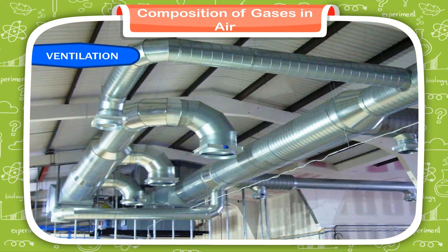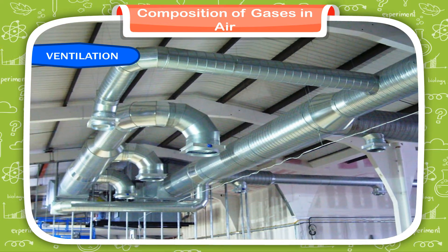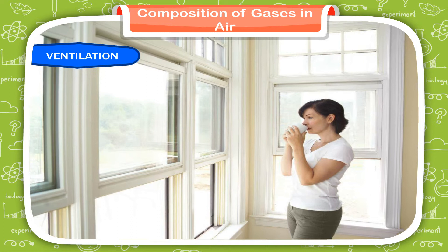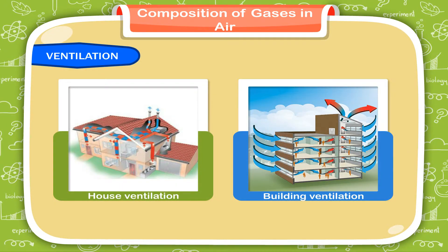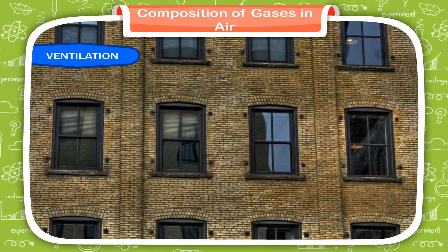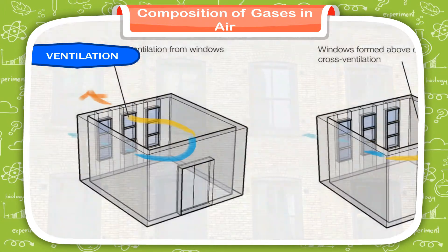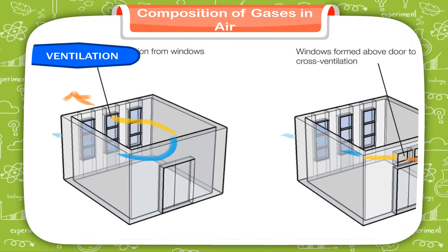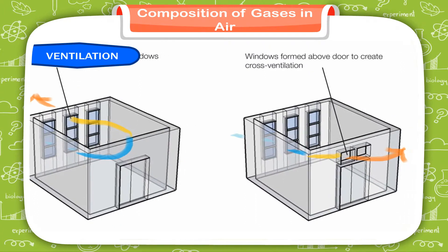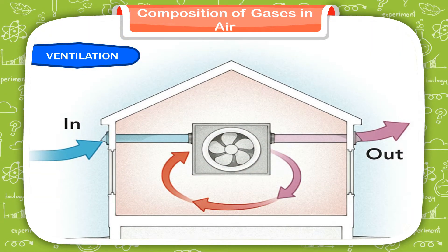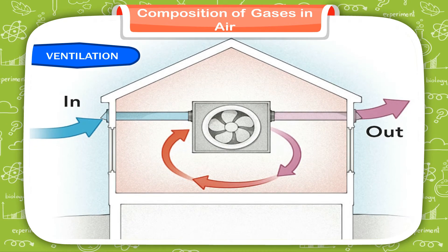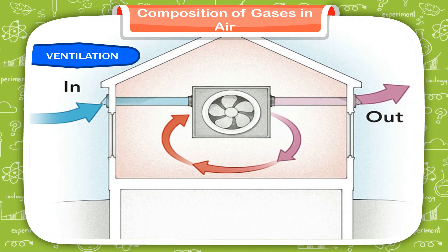Ventilation is a system that allows fresh air to enter a room or a building. Fresh air is also good for health. A place such as a house or building should always be well ventilated. For proper ventilation, a building must have enough windows and doors. The windows must be ideally placed opposite each other. This helps in cross ventilation — fresh air enters and the stale air goes out. Ventilators are also necessary inside a building. Ventilators are small openings in the walls just below the ceiling which help in proper circulation of air.